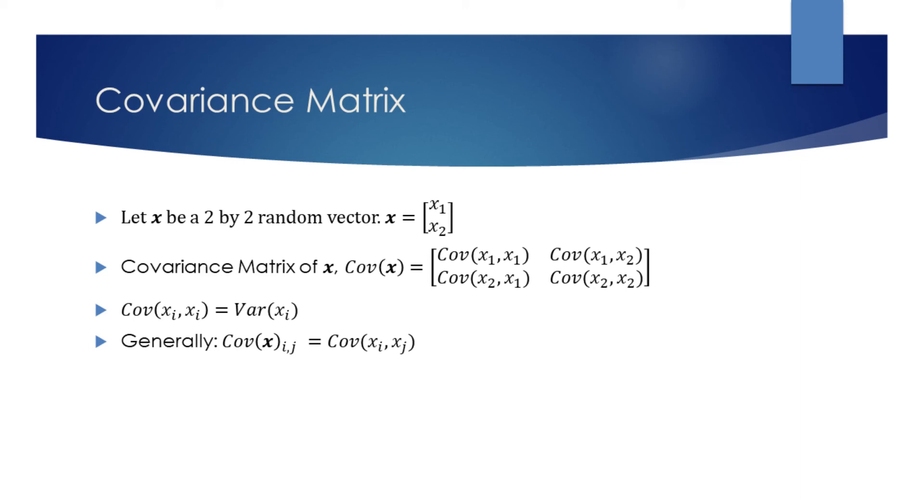This means that if the numbering of the column and the row is the same, we end up finding the covariance of a random variable with itself, which is essentially the variance of that random variable. In general, the covariance matrix gives the covariance among the elements of a random vector.